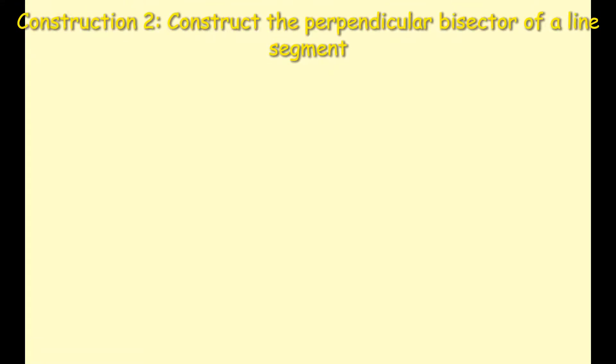In this video we're looking at Construction 2, which is how to construct the perpendicular bisector of a line segment. A bisector is basically cutting the line segment in two equal parts—it's cutting it in half.